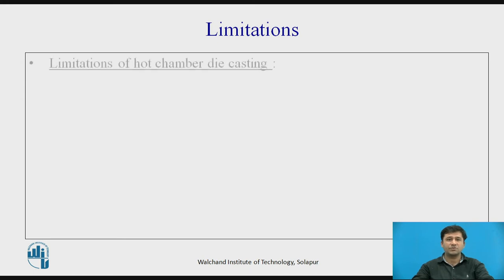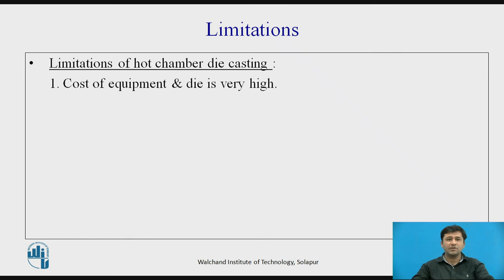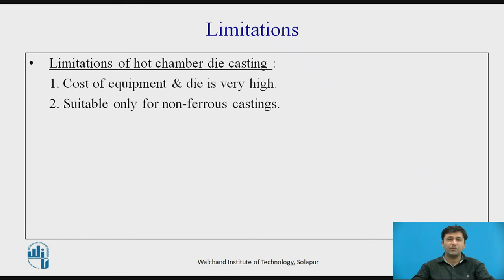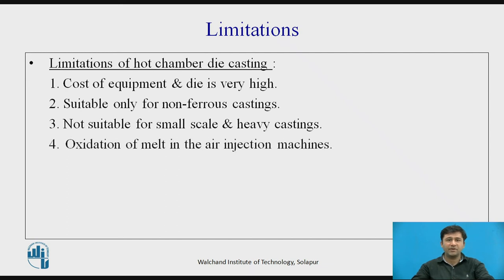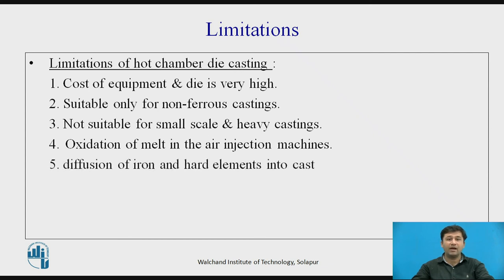Limitations of hot chamber die casting: the cost of equipment and dies is very high, making the initial investment significant. It is suitable only for non-ferrous castings. It is not suitable for small-scale production or for heavy, large castings, as constructing a big machine bed would not be feasible. Oxidation of metal in the air injection machine is possible due to more contact with air. Diffusion of iron and hard elements into the metal is also a concern with the plunger type.